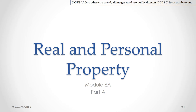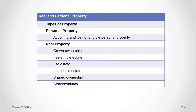Hello, it's Waylon Chow. This is Real and Personal Property, Module 6a, Part A. In this part, we will look at the different types of property in law and focus on personal property. In particular, how do you acquire and lose rights over tangible personal property?